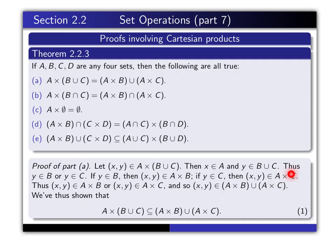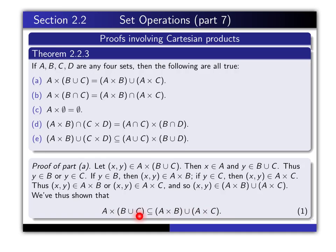So the two cases tell us that either X, Y is in A cross B or X, Y is in A cross C, and therefore X, Y is in the union of those two sets. Thus, the ordered pair is in A cross B union A cross C. So I started off by taking my X, Y in the left-hand side, proved that it was in the right-hand side, and so I have the right to say that this set is a subset of this set. For the other half of the proof, we have to prove the opposite set inclusion, and that's what I'll do on the next slide.